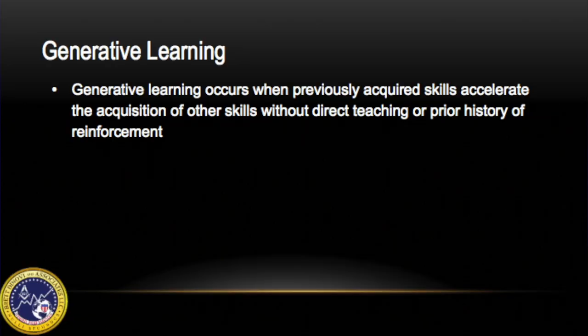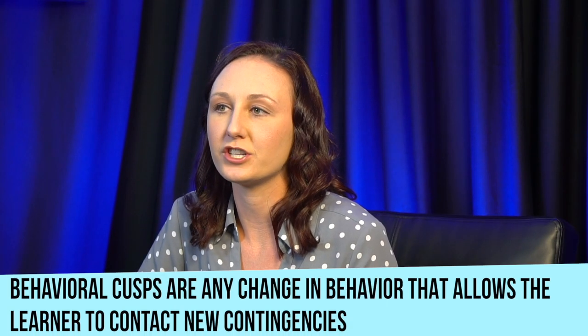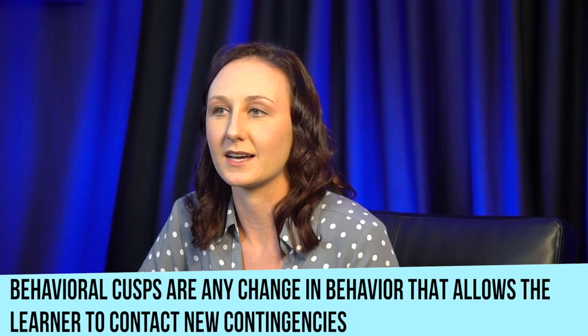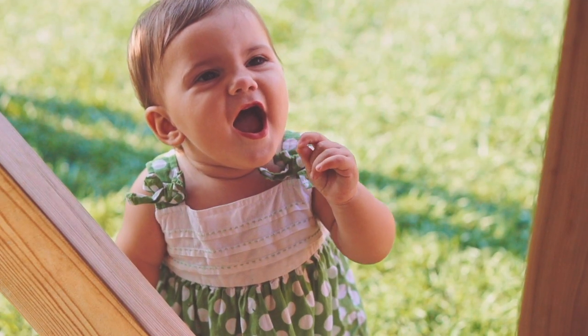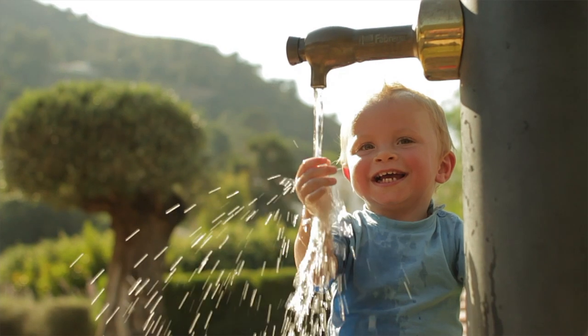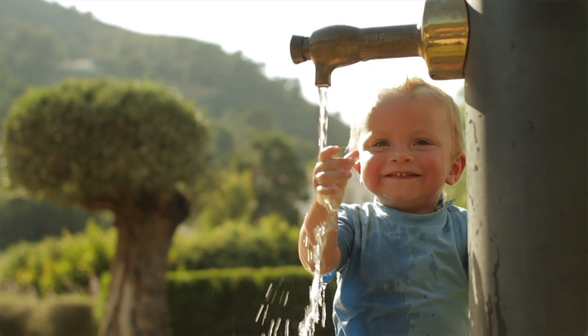In order to understand matrix training, it is important to touch on generative learning and recombinative generalization. Generative learning occurs when previously acquired skills accelerate the acquisition of other skills without direct teaching or a prior history of reinforcement. An example of generative learning is behavioral cusps. Behavioral cusps are any change in behavior that allows the learner to contact new contingencies. A behavioral cusp exposes the learner to new environments, new reinforcers and punishers, new responses, and new contingencies.